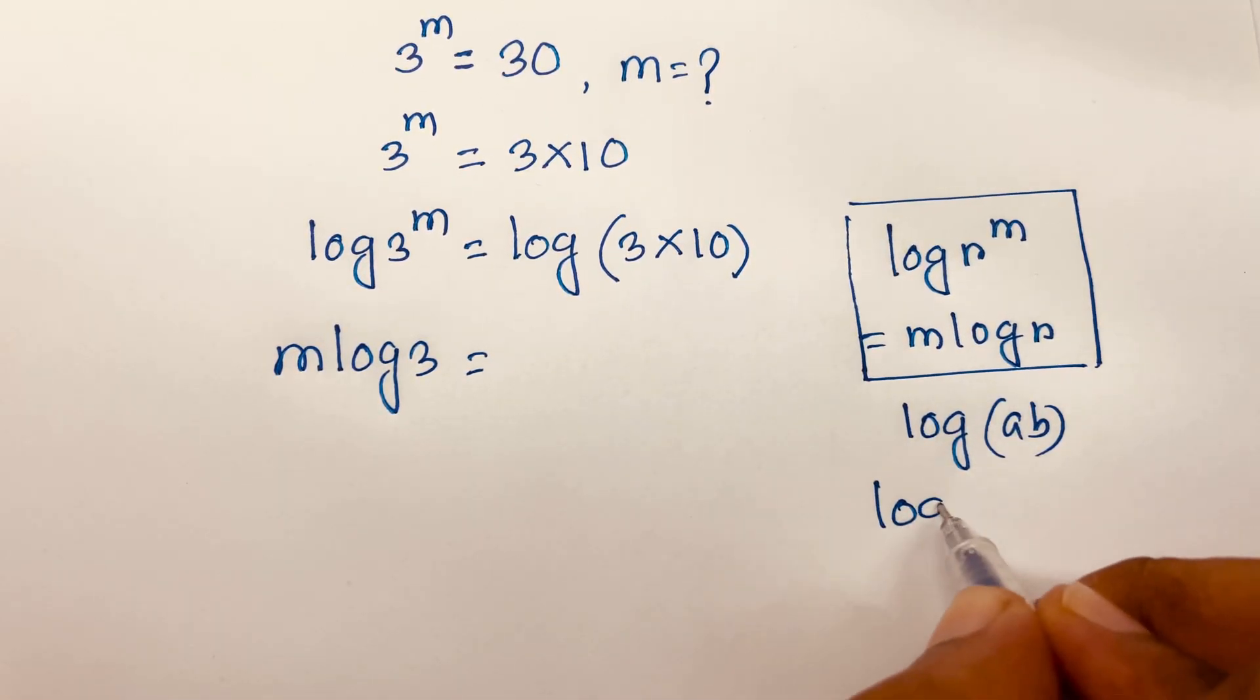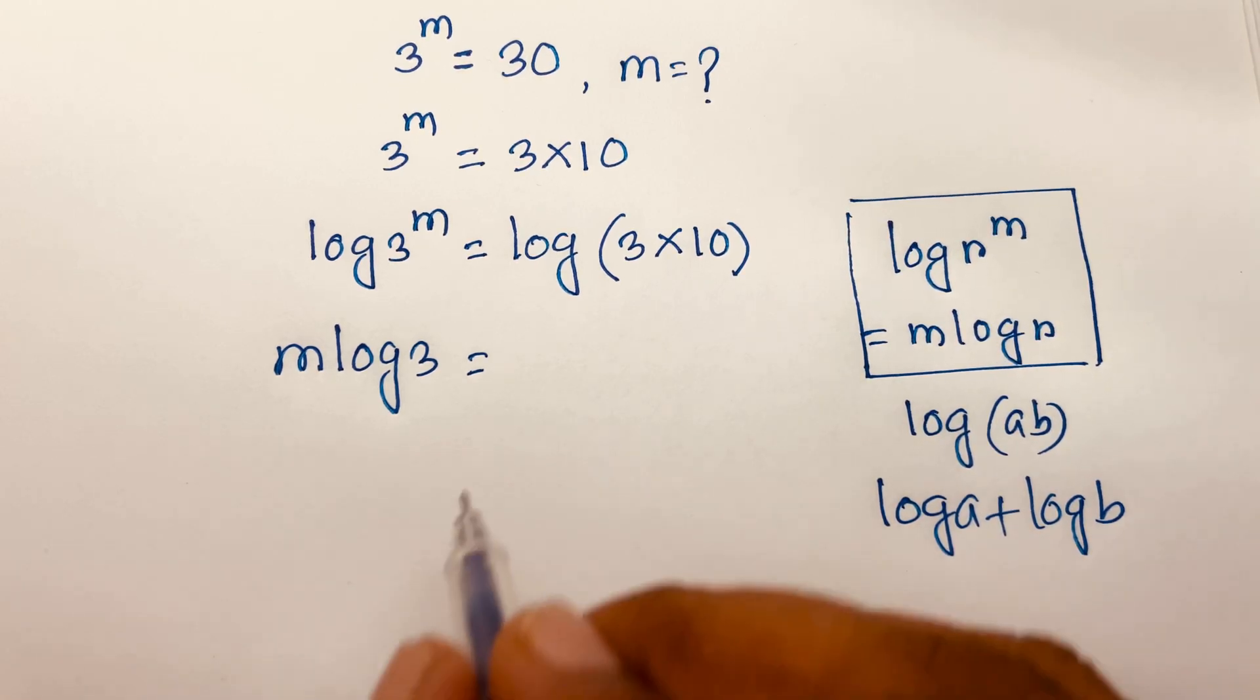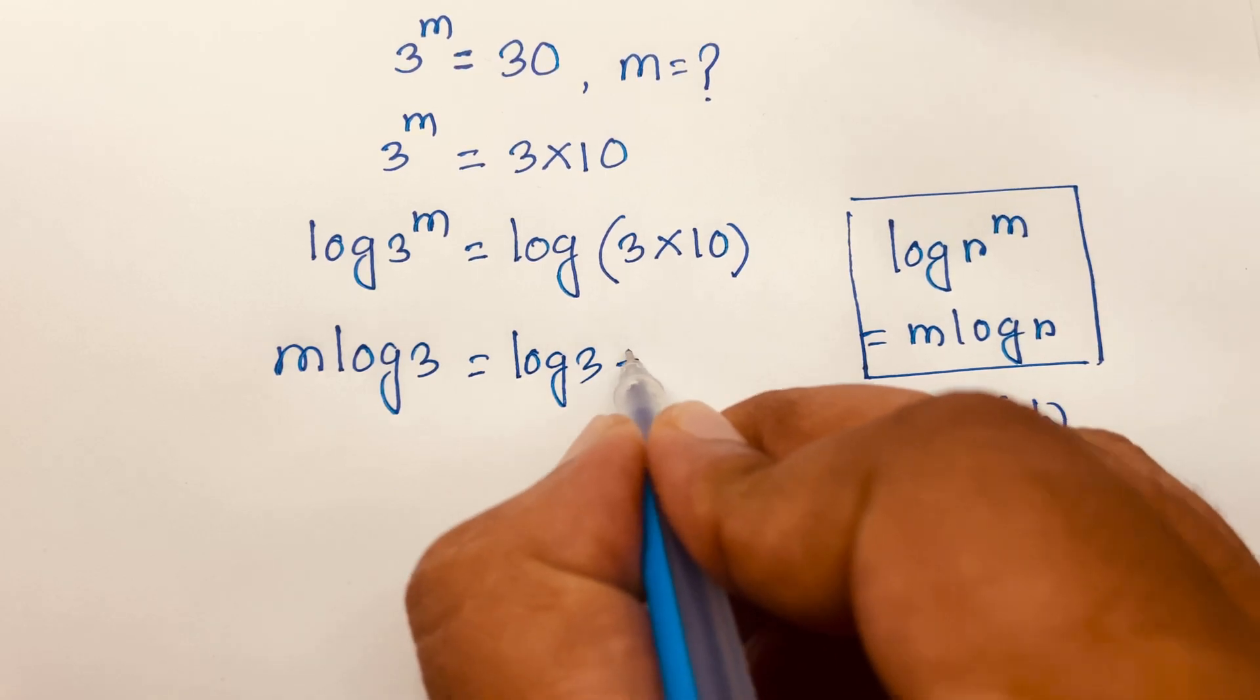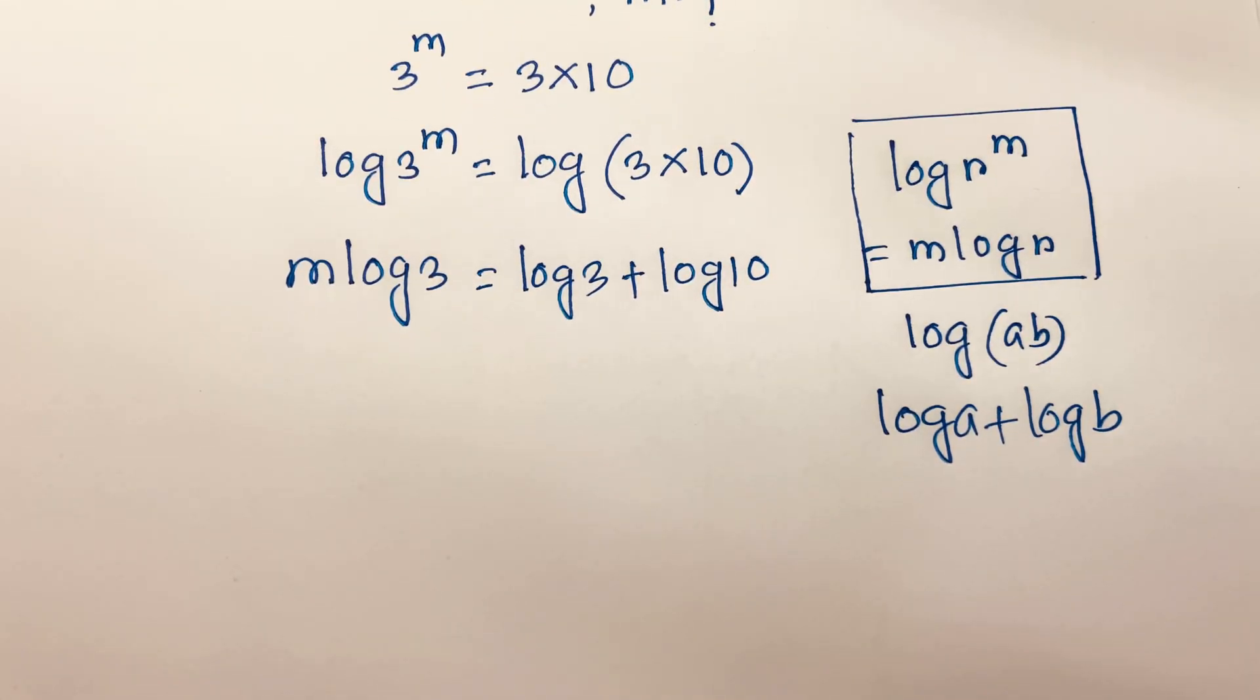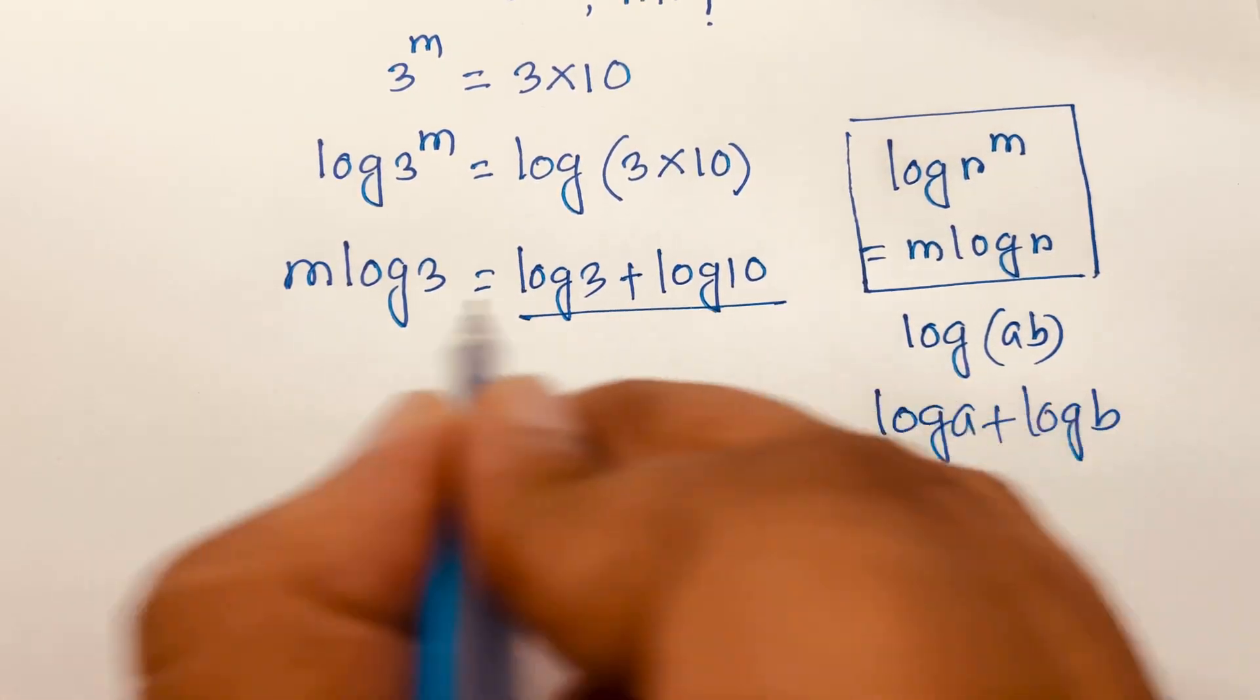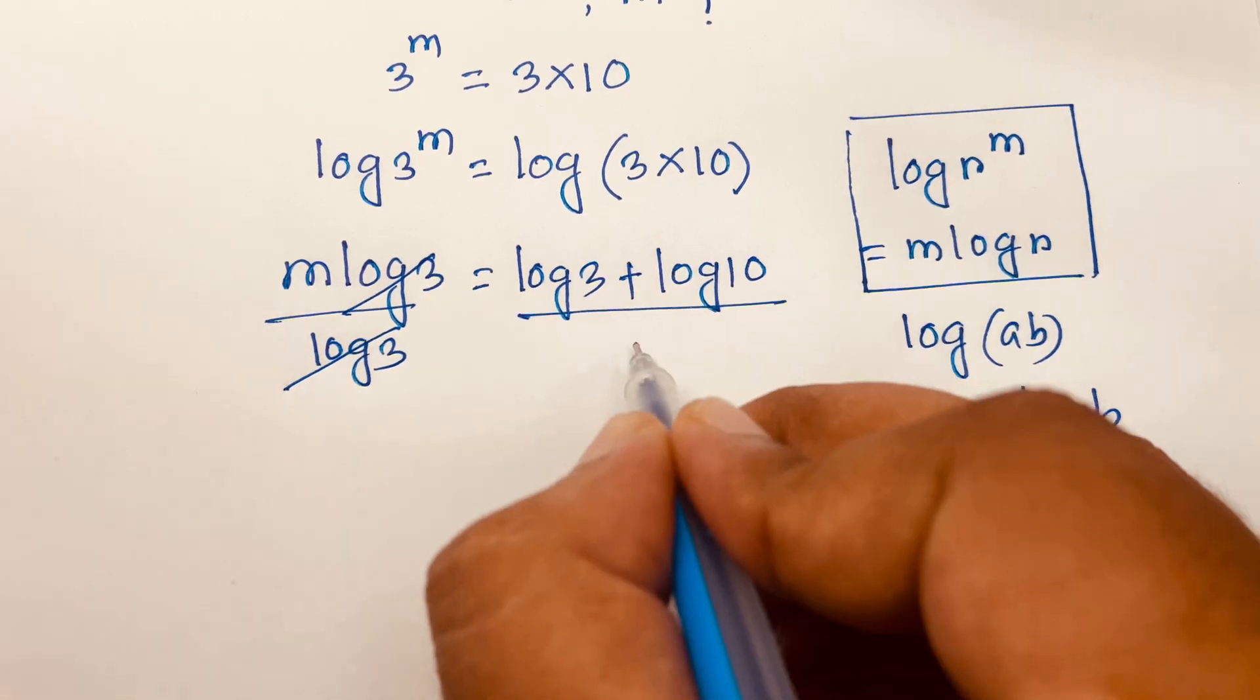According to this rule, it becomes log 3 plus log 10. Then I divide both sides by log 3. Here log 3 over log 3 cancels.